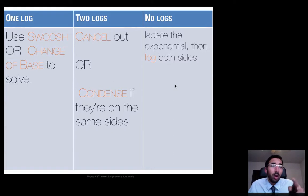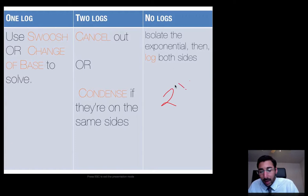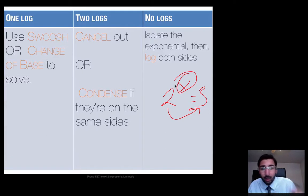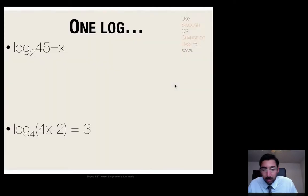If we have no logs in a problem, that would mean we have something like an x in the exponent — a variable in the exponent. What we're going to do is log both sides, converting the exponential to a log in order to solve for x. Alright, let's get started with some one-log examples.